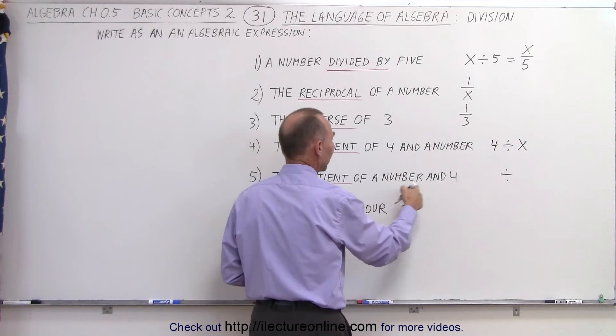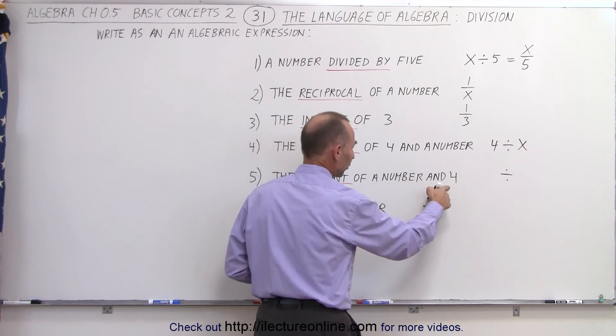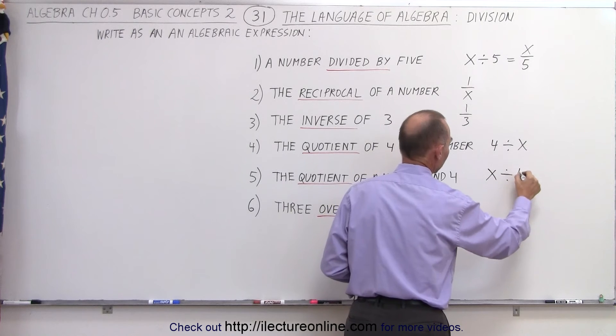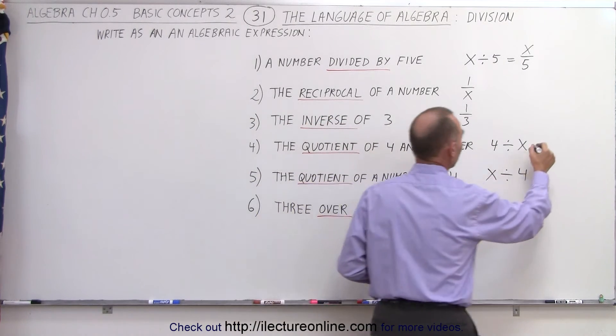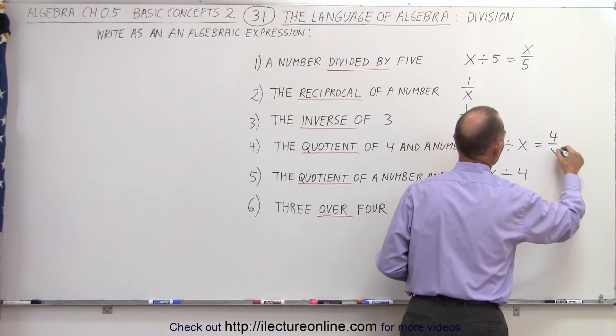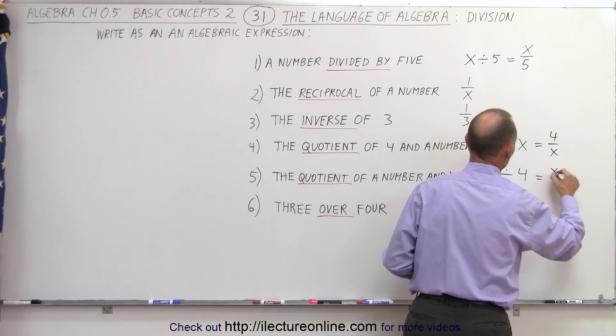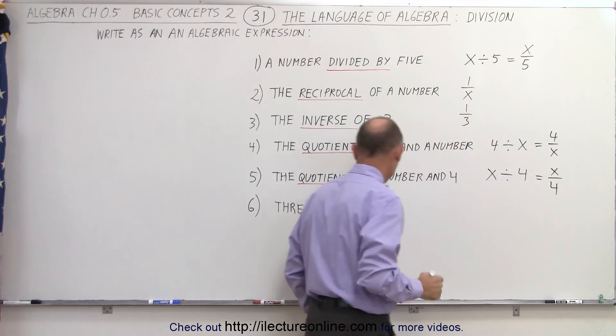Or, if we see a number and 4, the number goes first, the 4 goes last, that would be x divided by 4. And that's how we can tell which is which. And so this can be written as 4 over x, or x over 4.